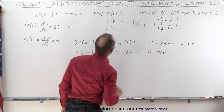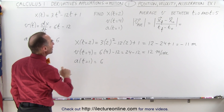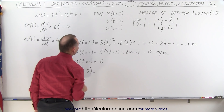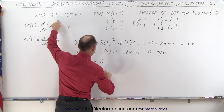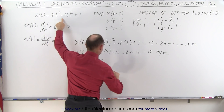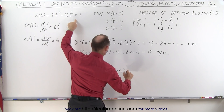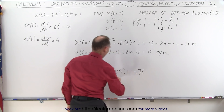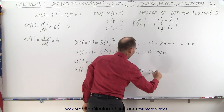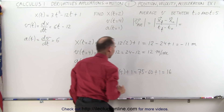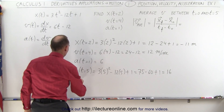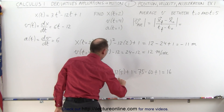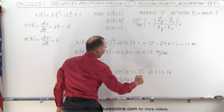We need our final position, which is x when time equals 5. Using our position equation, that's 3 times 5 squared, minus 12 times 5, plus 1 — equal to 75 minus 60 plus 1, which is 16 meters. And when time is equal to 0, that's 3 times 0 squared minus 12 times 0 plus 1, which is simply equal to 1 meter.